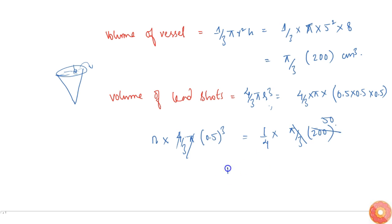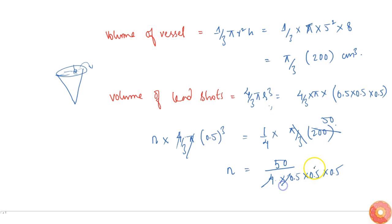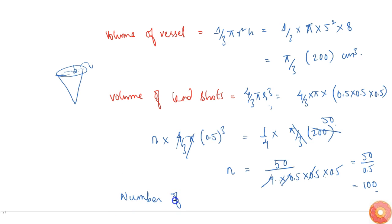Therefore, n equals 50 divided by four times 0.5 times 0.5 times 0.5. After cancellation, this simplifies to 50 divided by four times 0.5 times 0.5, which equals 100. Therefore, the number of lead shots thrown into the vessel is equal to 100.